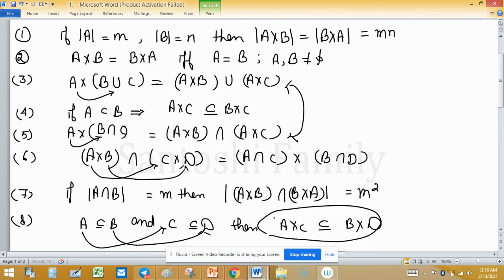So these are eight basic properties we should know when we are dealing with topology Cartesian product, or when we are starting real analysis.